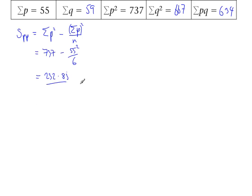It's good to keep your data as accurate as you can. If you get a recurring decimal, just write down four or five decimal places to make sure you've got enough accuracy for later on. Sqq, very similar definition. Sum of all the Q values squared minus the sum of all the Q values squared divided by n. Sigma Q squared is 667 minus sigma Q 59 squared over 6, and that comes to 86.83 recurring.